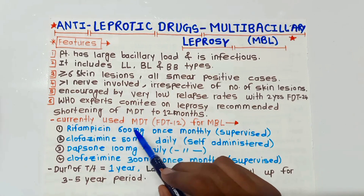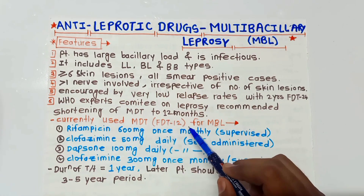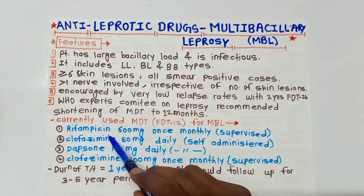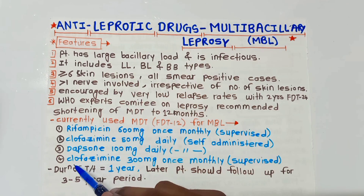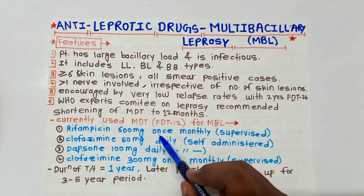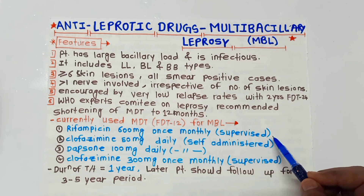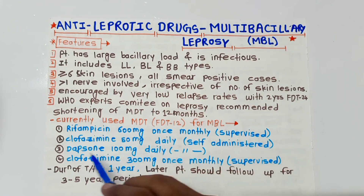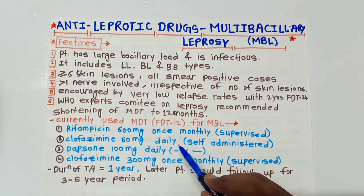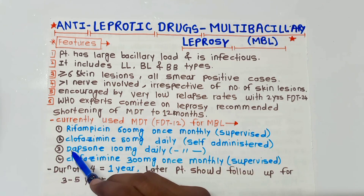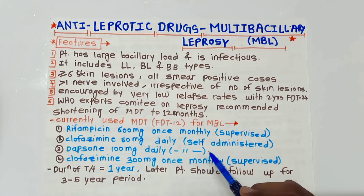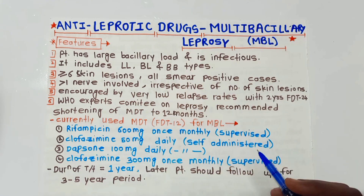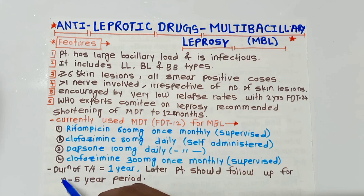Currently used MDT, or multi-drug treatment, is MDT 12 for multi-bacillary leprosy, as follows: Rifampicin 600 mg once monthly — this is a supervised dose given by a medical practitioner. Clofazimine 50 mg daily — self-administered dose. Dapsone 100 mg daily — also self-administered. And Clofazimine 300 mg once monthly — supervised dose.